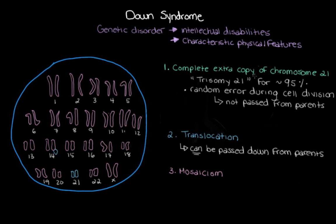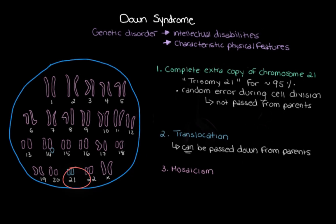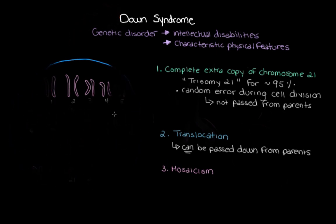For the vast majority, this extra 21st chromosome pops up because of a random error that occurs during cell division rather than being passed down from mom or dad. Once someone has this extra genetic material from chromosome 21, they have an extra copy of all the genes found in that chromosome. These extra genes help make extra proteins that the body doesn't really need, and that can interfere with lots of different processes inside our bodies — and that is why we end up with down syndrome.